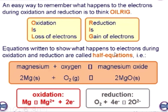Equations written to show what happens to electrons during oxidation and reduction are called half equations. For example, magnesium plus oxygen gives magnesium oxide. In this reaction, magnesium loses two electrons, so oxidation takes place. On the product side, oxygen gains electrons, so reduction takes place. Loss of electron is oxidation, and gain of electron is reduction.